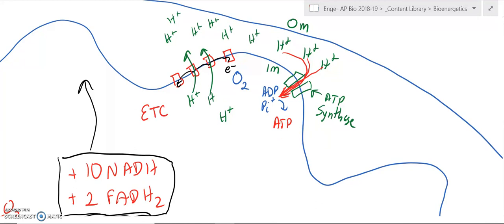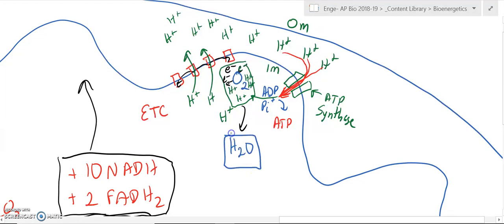Now, the hydrogens that flow back in end up over here. And so, now I have hydrogens, oxygen, and electrons. And those come together to form water, which is a waste.